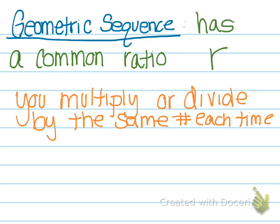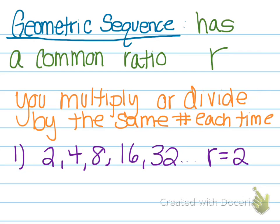Let's look at an example. If I gave you 2, 4, 8, 16, 32, the common ratio r would be 2. So you multiply by 2 each time.